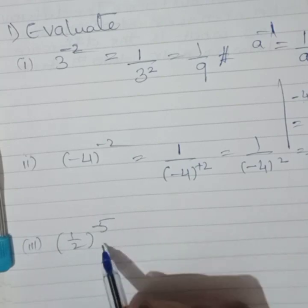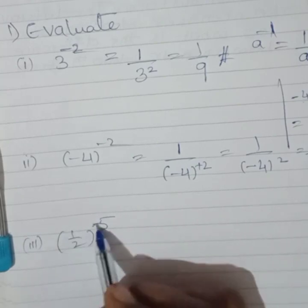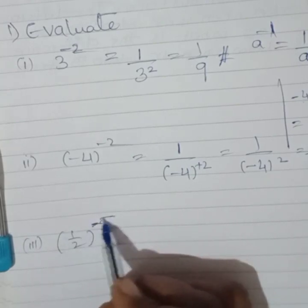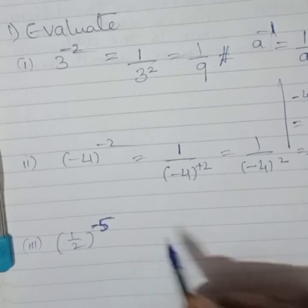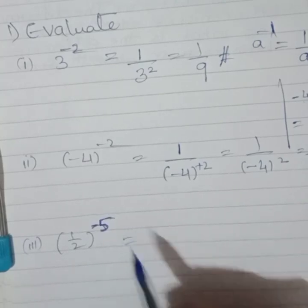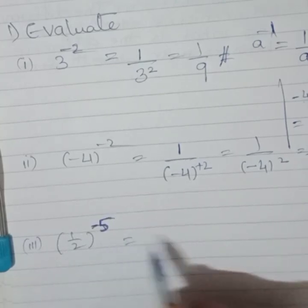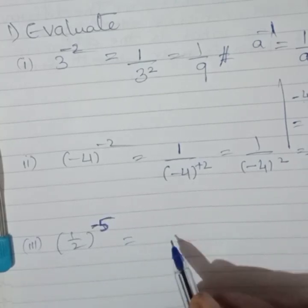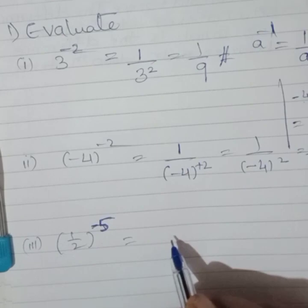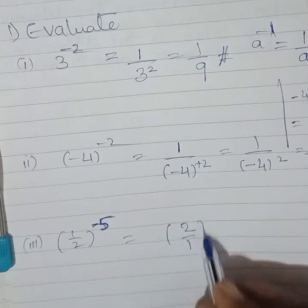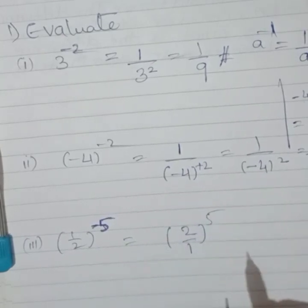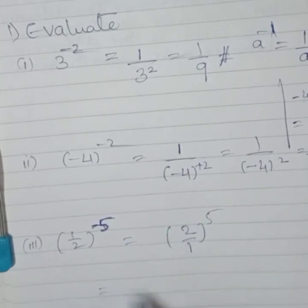In the same way, we have here 1 upon 2 raised to minus 5. This is very interesting. Look at this one. I will show you in a simple and easy way. You can do this as: 2 upon 1 raised to plus 5, this way. How does it come? I will show you.